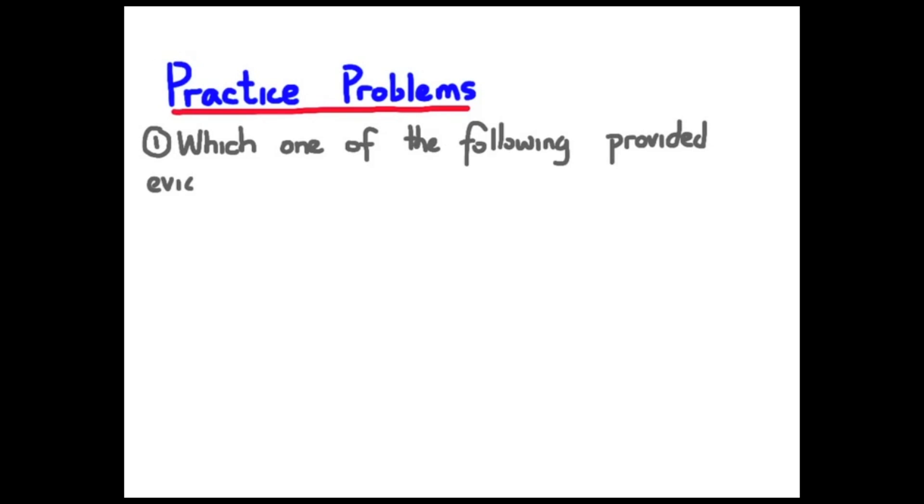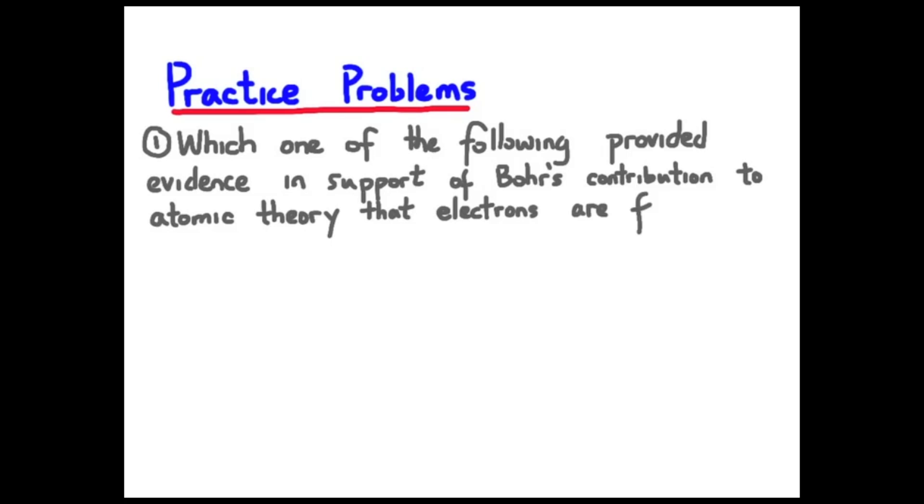All right, let's try a practice problem. Which one of the following provided evidence in support of Bohr's contribution to atomic theory? That is that electrons are found only at discrete energy levels.